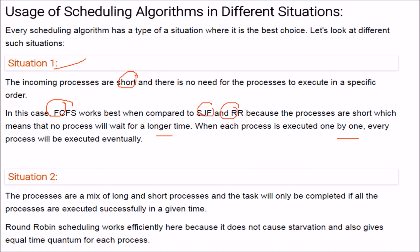Situation 2 — there is a mix of long and short processes, and all must be executed successfully within a given time. Round Robin scheduling is best here because it does not cause starvation and gives each process an equal time quantum.